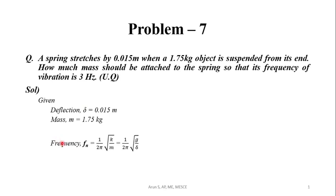The frequency of vibration fn is given by 1 over 2π times the square root of k over m, which equals 1 over 2π times the square root of g over δ, where g is the acceleration due to gravity.